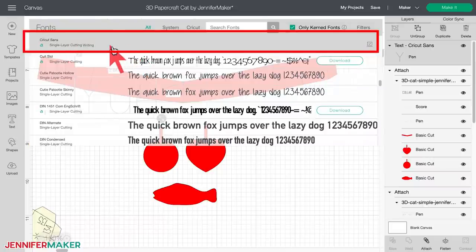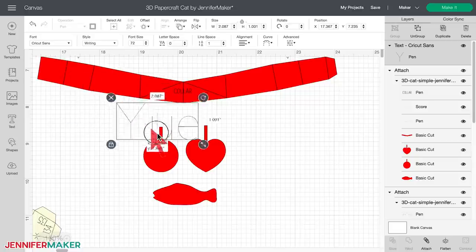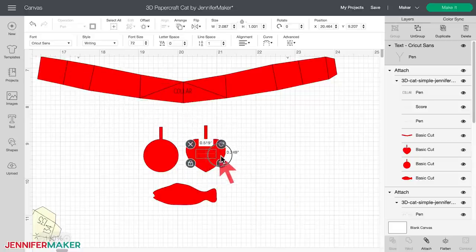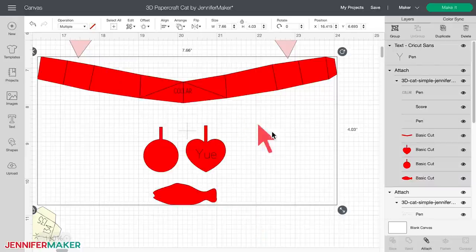And then resize and position the writing on the tag. And then don't forget to attach the text to one of the tags. So you select both the text and a tag and choose attach.